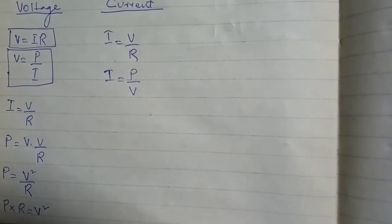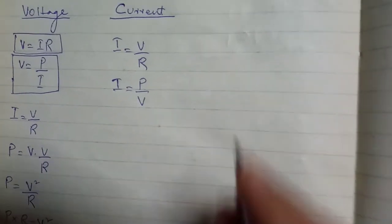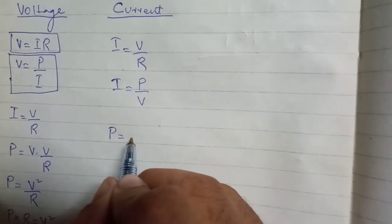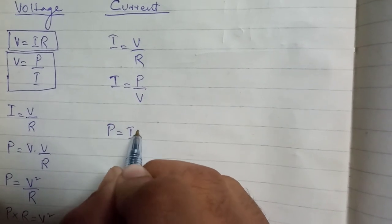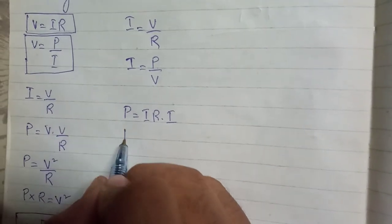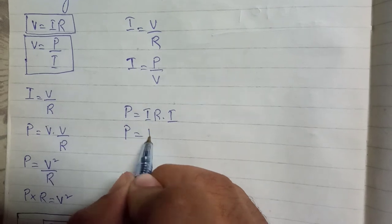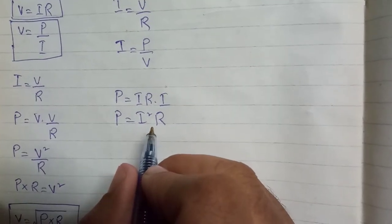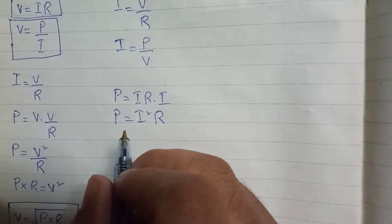You can make the third formula of current from P is equal to IR multiplied by I. I times I becomes I squared, so power is equal to I squared R. Since resistance is multiplying by I squared, on the other side of the equal sign it will be divided.